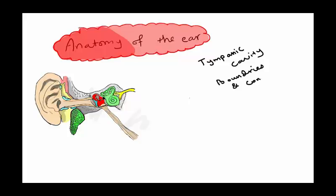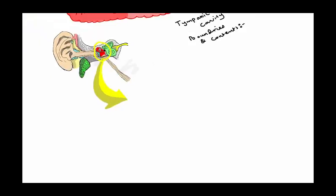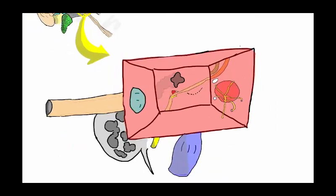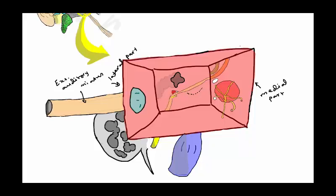Now we will talk about the tympanic cavity — the boundaries and contents of the middle ear cavity. It is called the tympanic cavity, and that is why every structure running through it will have a name like 'tympani' or 'tympanic.' The external auditory meatus has a lateral part, a medial part, a superior part, a posterior part, and an inferior part.